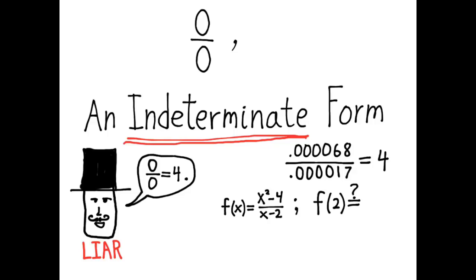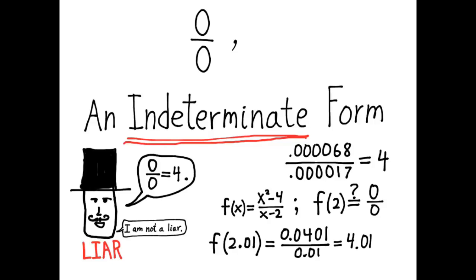Now let's just figure out what f of 2 is by finding values of f really near 2. So f of 2.01, and he gets numbers very near 4. So in this way he can claim that 0 over 0 equals 4. But we understand that 0 over 0 could equal anything.